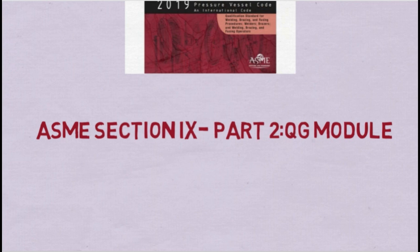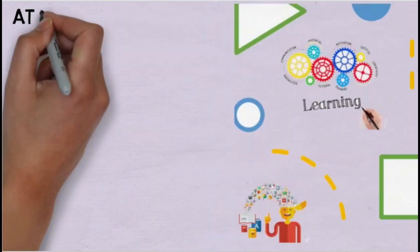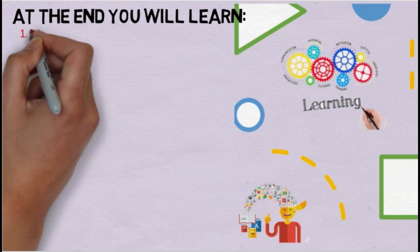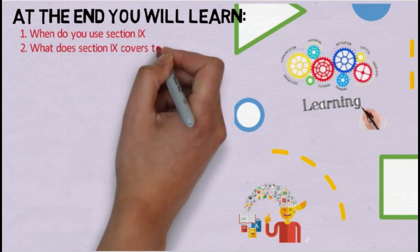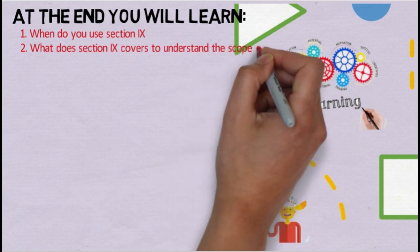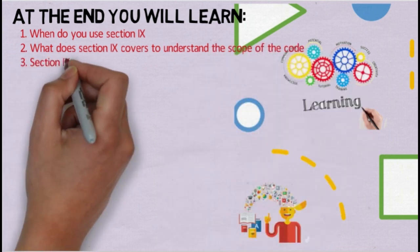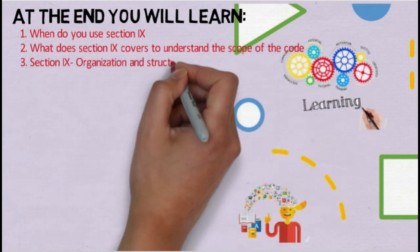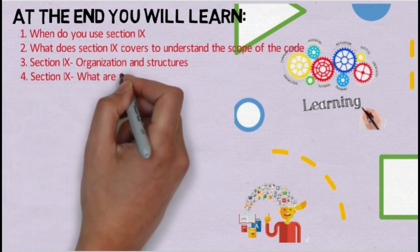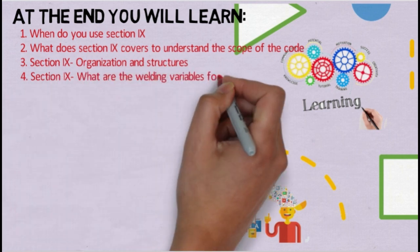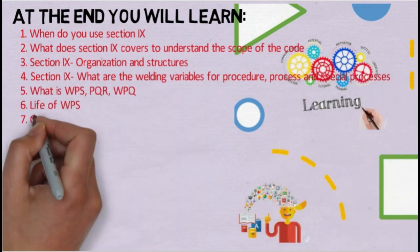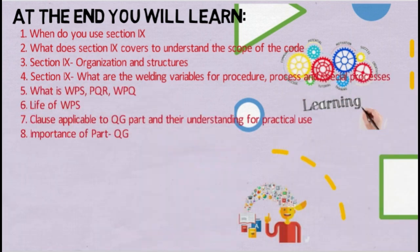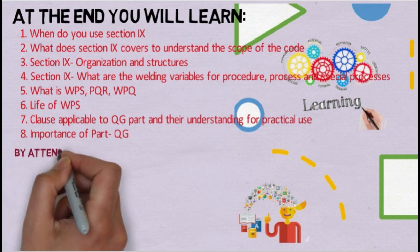These general requirements are applicable to all parts of Section 9. At the end of today's webinar, we will learn: when do we use Section 9, what does Section 9 cover to understand the scope of the code, Section 9 organization and structure, what are the welding variables for procedure, process and special processes, what is WPS, PQR and WPQ, and the clauses applicable to the QG part and their understanding for practical use.